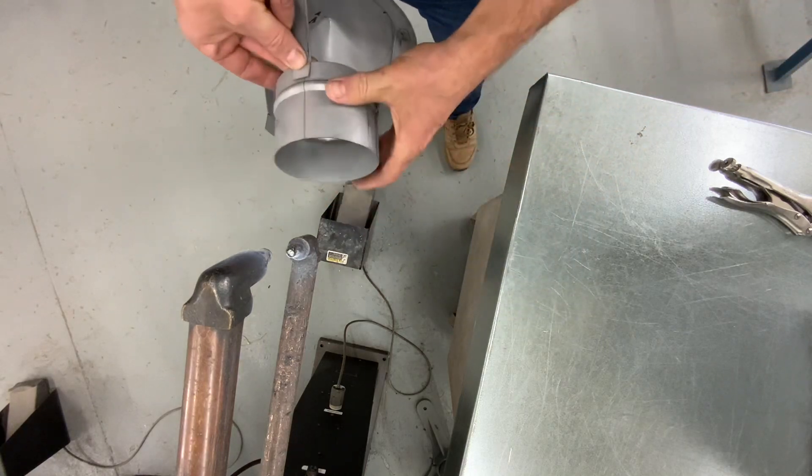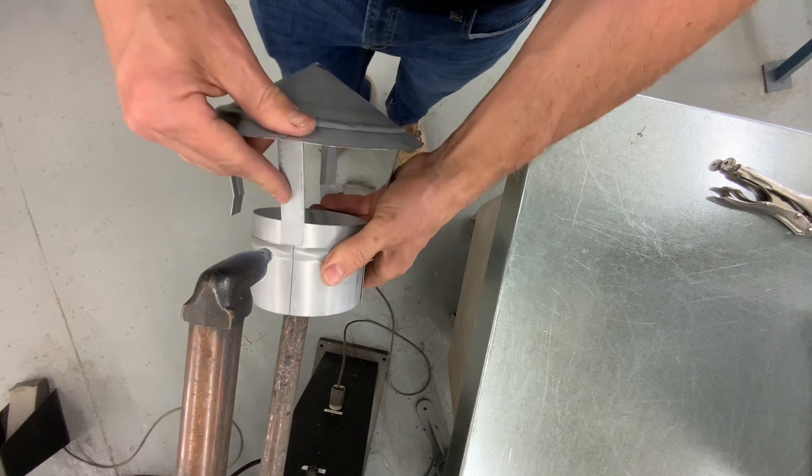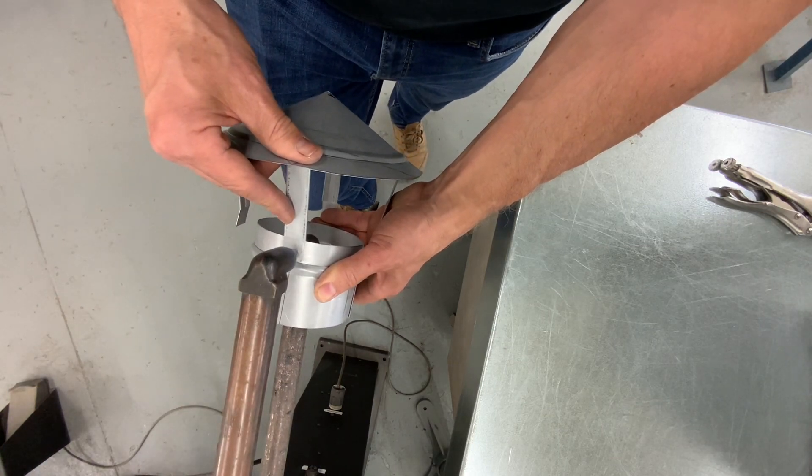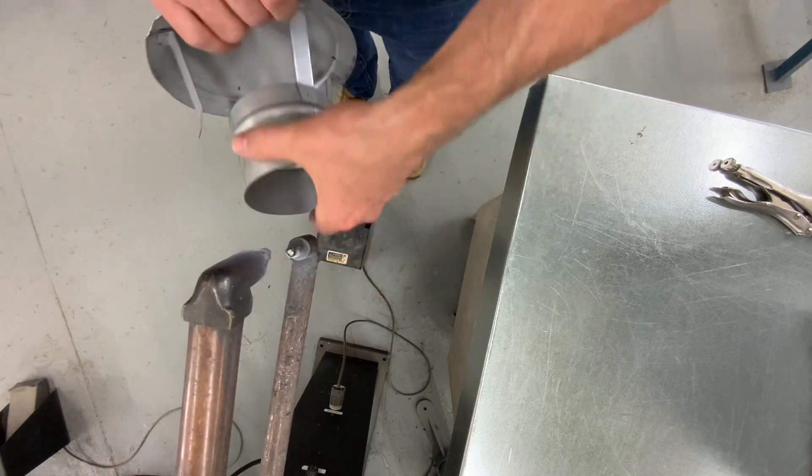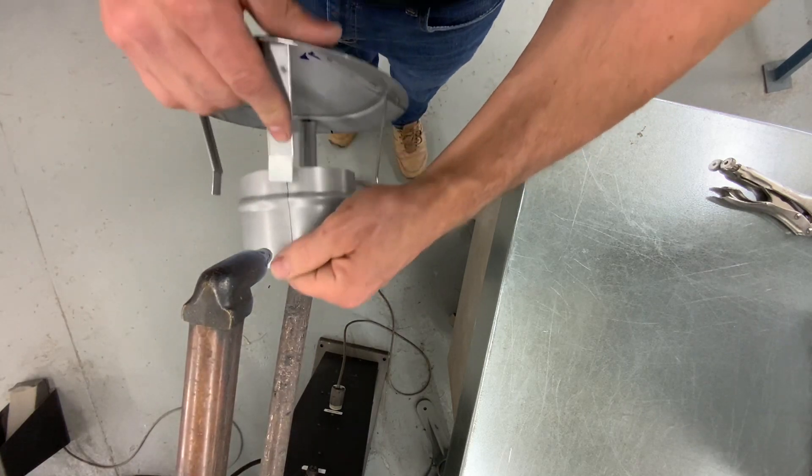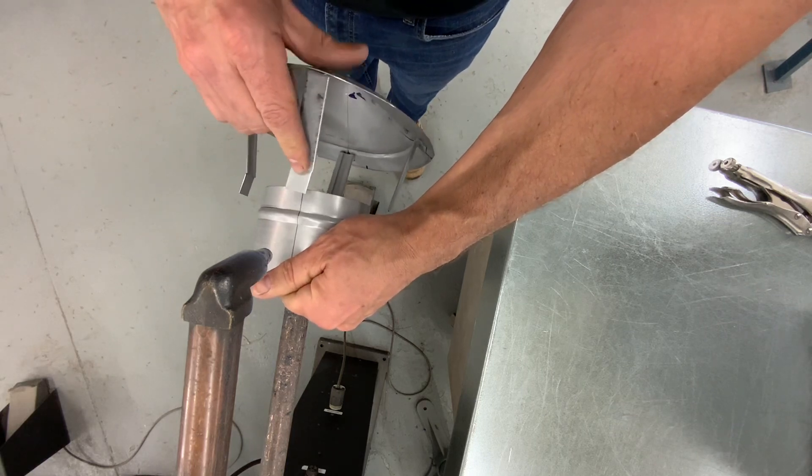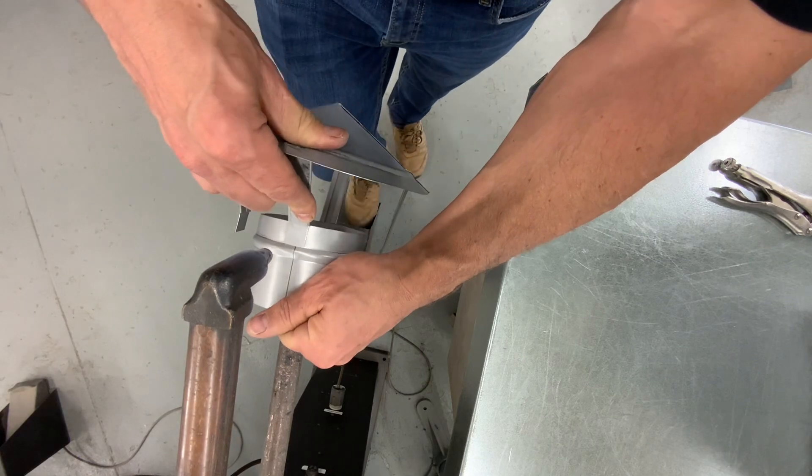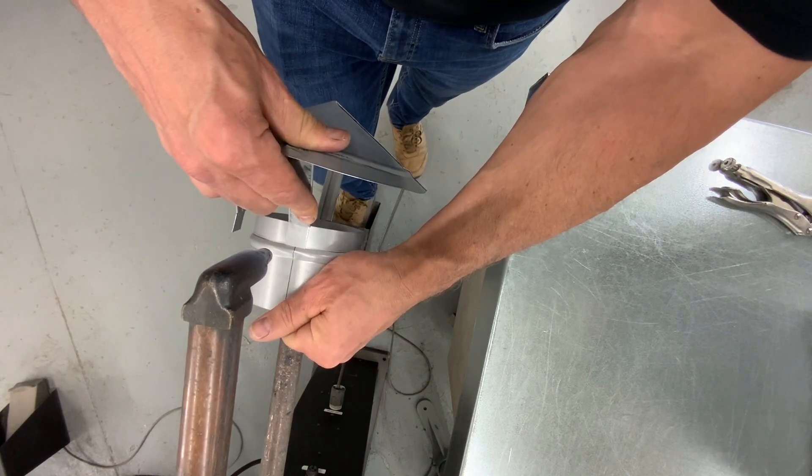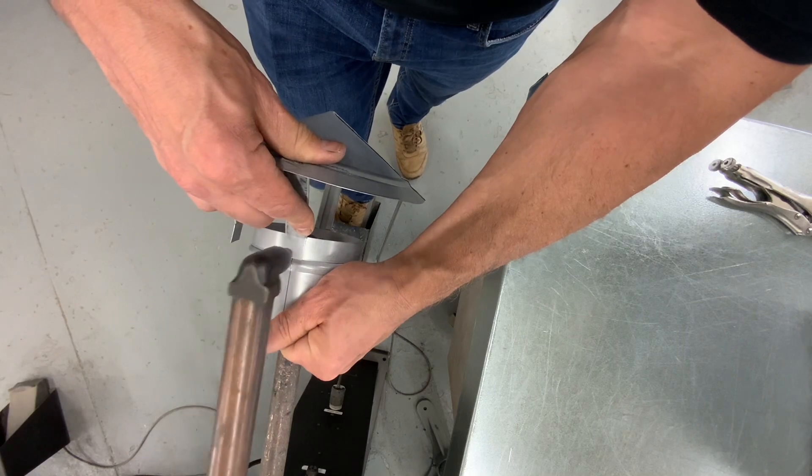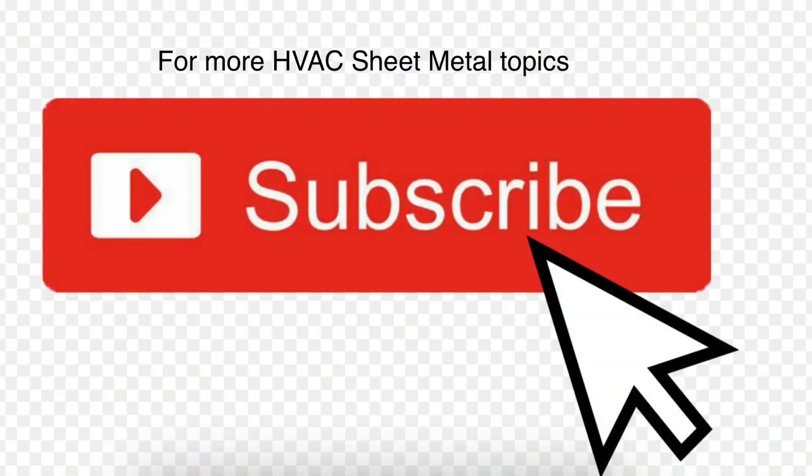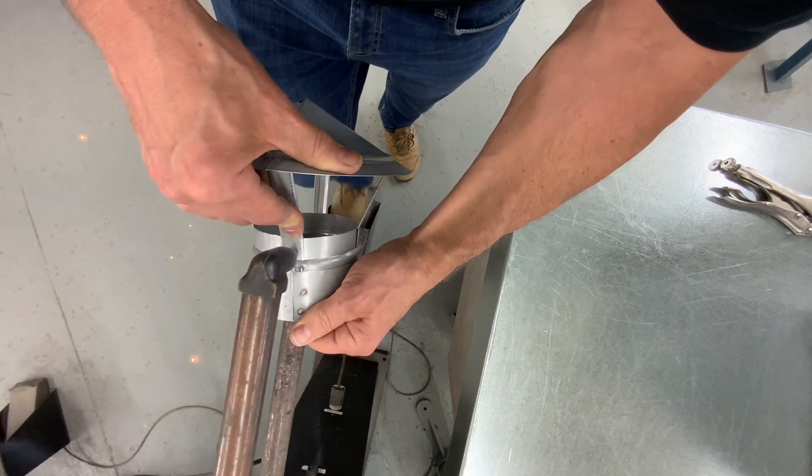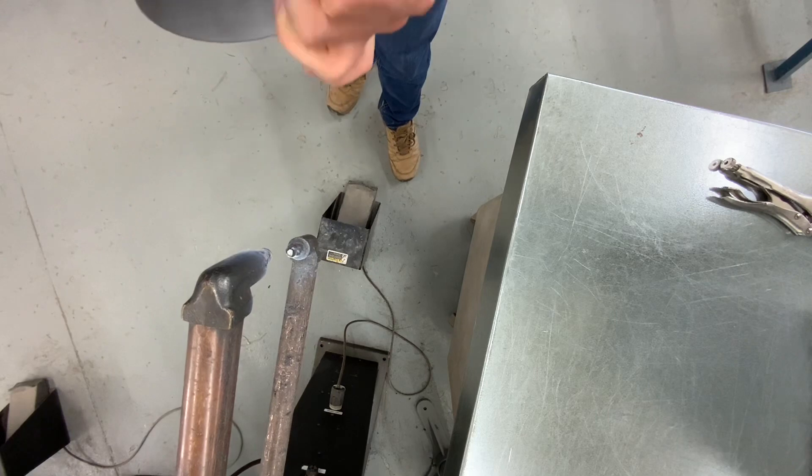And as you can see, because we marked the stack or we divided it up into four equal spaces, I know exactly where to spot weld the legs onto the stack. And again, the bead on the bottom acts as a stop for the brackets.